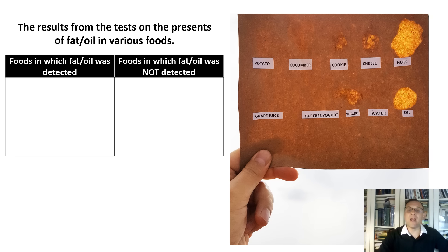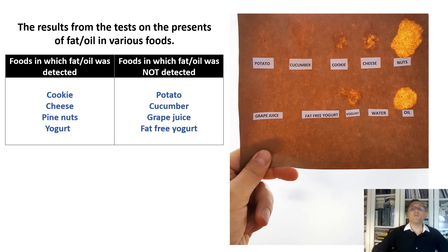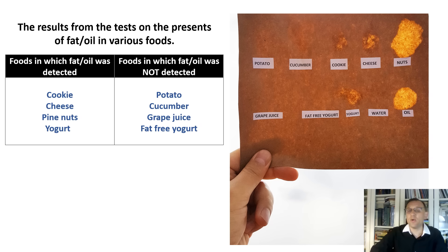Compare each of your results with the positive and negative controls. Record your results by sorting the tested foods in the table. So, from what we see, lipids are present in the cookies we tested, cheese, pine nuts, and yogurt.